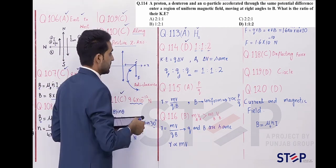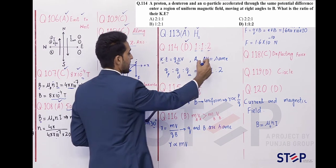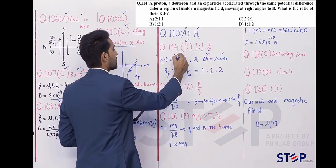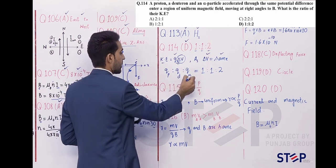You take the ratio of kinetic energy. Kinetic energy equals Q × ΔV. Since ΔV is the same for all three, you simply take the ratio of charges: the charge of proton, the charge of deuteron, the charge of alpha particle.